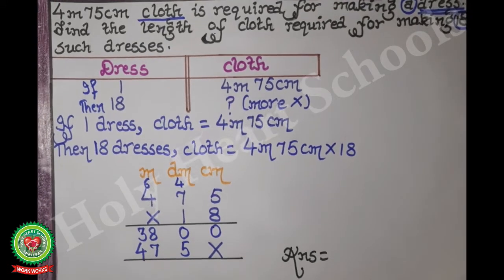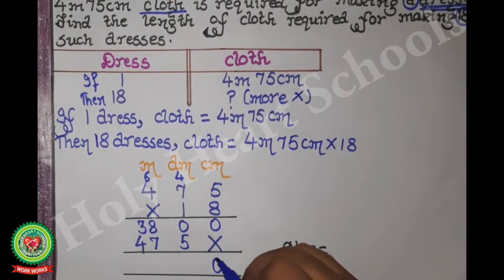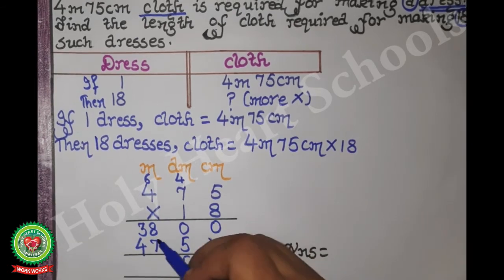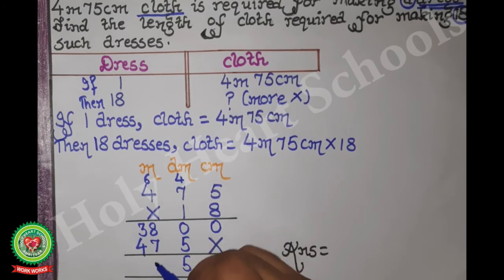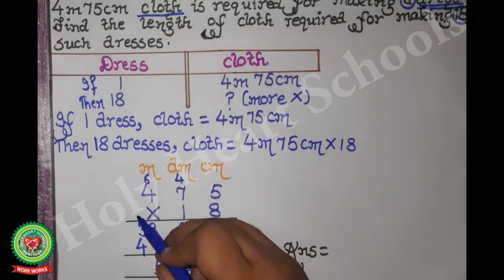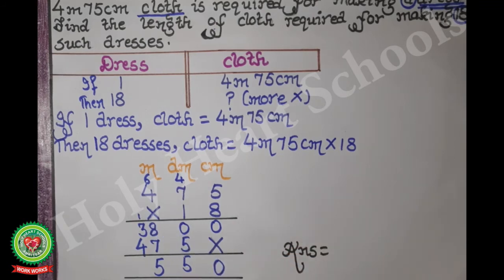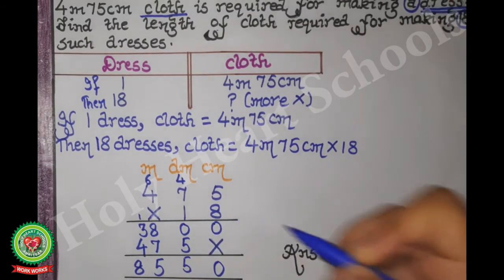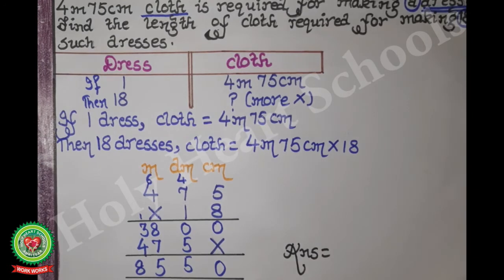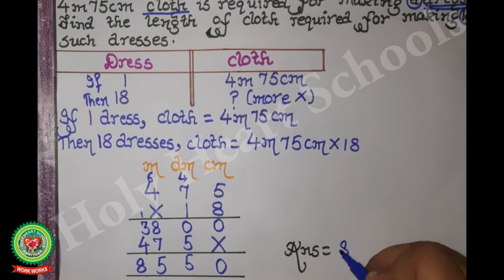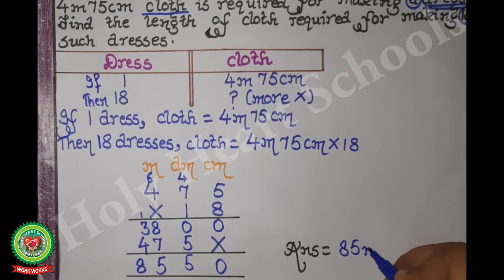After addition: 0, 0 plus 5 = 5, 8 plus 7 = 15 write 5 carry 1, then 4 + 3 + 1 = 8. The answer is 85 meters and 50 centimeters.